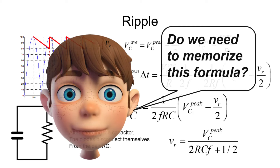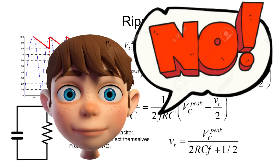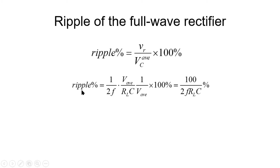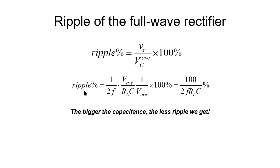Do we need to memorize this formula? Absolutely not. If we want to find the ripple as a percentage, we relate it to the average voltage in the circuit. Substituting the expression for V_R — which I recommend you not memorize — we find that the ripple percentage is inversely proportional to the capacitance, as expected: the bigger the capacitance, the less ripple. The purpose of developing all these expressions is just to show the process of finding ripple in a given circuit — not to give you a formula to memorize.